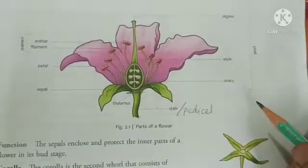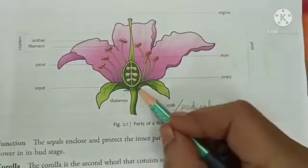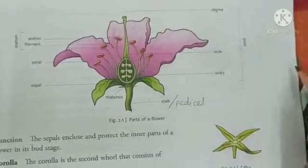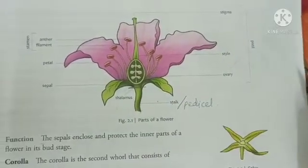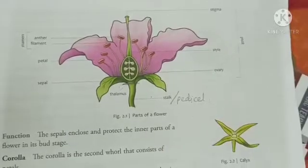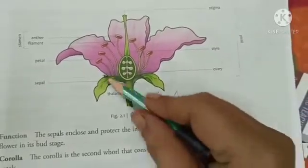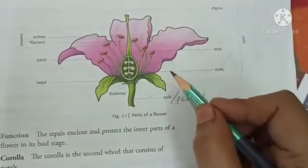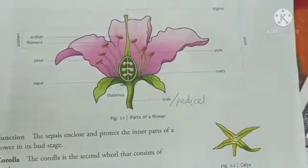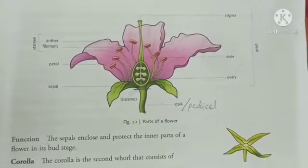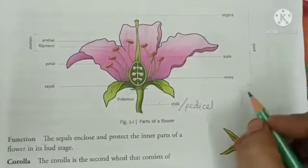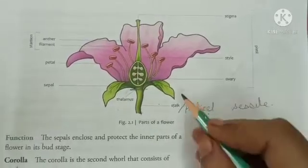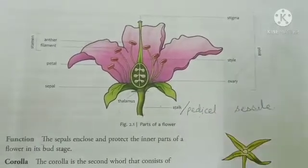Plants like tulip and lily have only one pedicel — one stalk bearing a single flower. But there are some plants such as lilac in which this pedicel is branched, meaning the pedicel has many branches and it will be bearing many flowers. Some flowers which do not have a pedicel are known as sessile flowers.